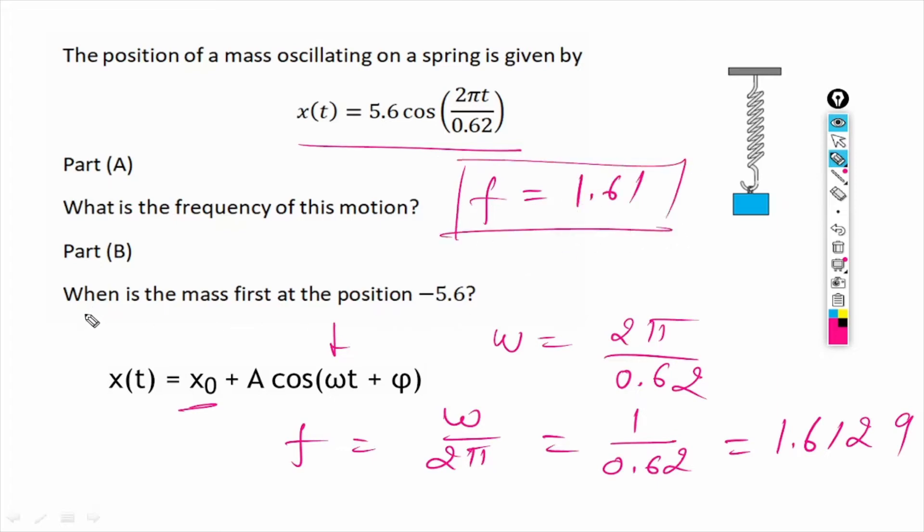Now in the second part, we have to find when is the mass first at the position minus 5.6. So that means the mass will reach this position many times, but when is the first time it reaches here.